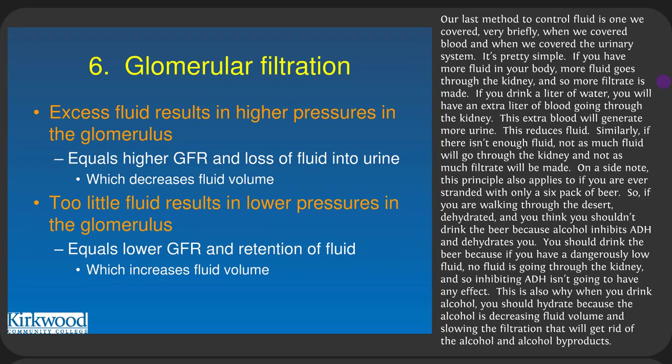One last method to control fluid is increased GFR. If you have more fluid in your body — say you drink an extra liter of water — more fluid goes through the kidney, more filtrate is made, and more urine is generated, reducing fluid. If you drink a liter of water, you'll have an extra liter of blood going through the kidney; this extra blood generates more urine. Similarly, if you don't have enough fluid, not as much goes through the kidney and not as much filtrate is made.